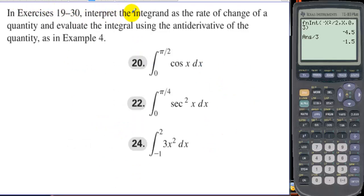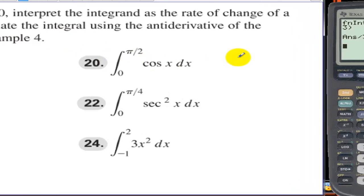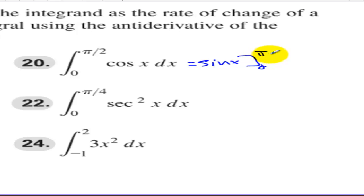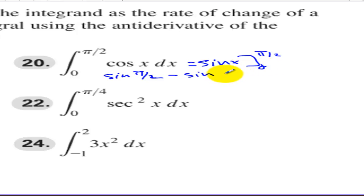In exercises 19 through 30, evaluate the integral using antiderivatives. The antiderivative of cosine is sine, evaluated from 0 to pi/2: sine(pi/2) minus sine(0) equals 1 minus 0. The answer is 1. The antiderivative of secant squared is tangent of x, evaluated from 0 to pi/4: tangent(pi/4) minus tangent(0) equals 1 minus 0. Also equal to 1.